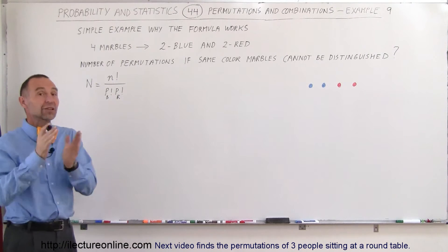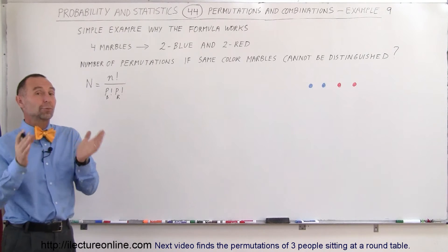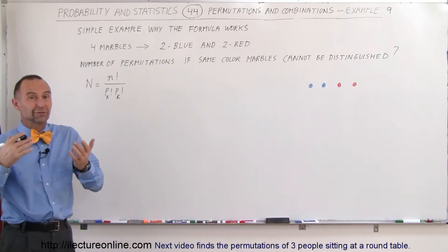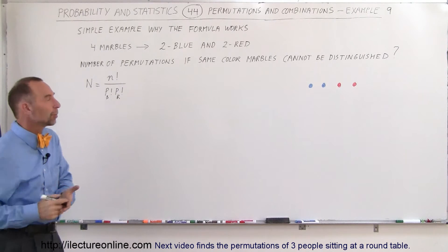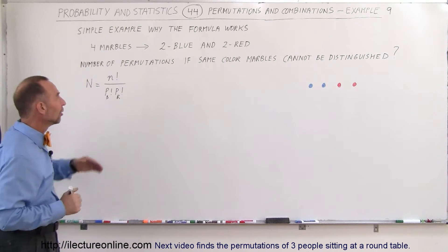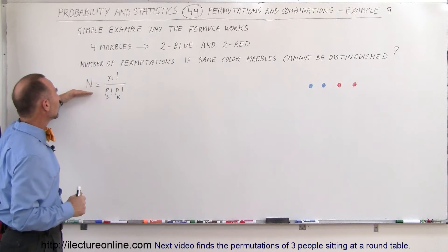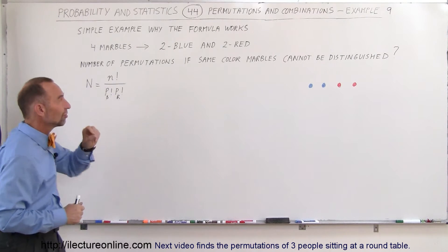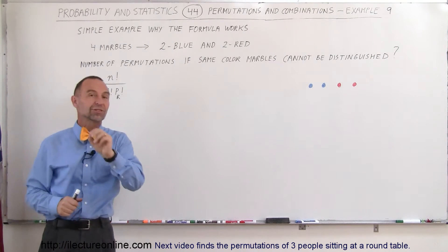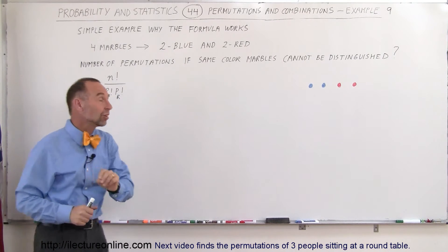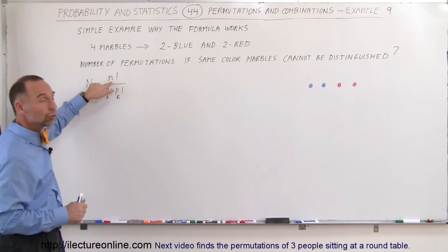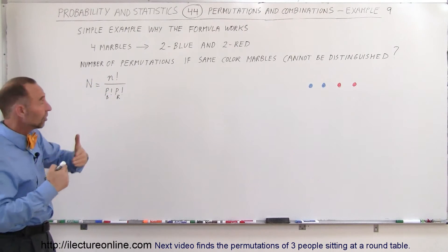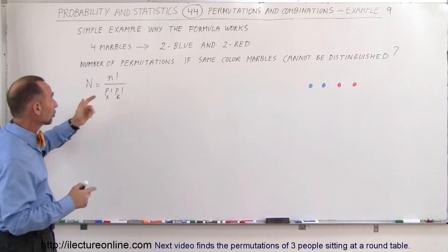If they could be distinguished, the number of permutations would simply be 4 factorial, because 4 is the number of marbles that we have. So the equation to find the number of permutations if the same color marbles cannot be distinguished is equal to the total number of marbles factorial — so in this case, 4 factorial —